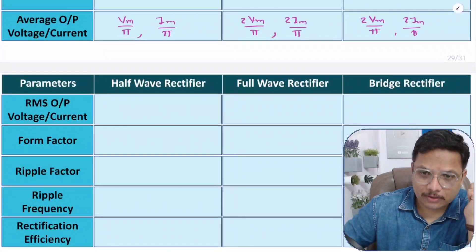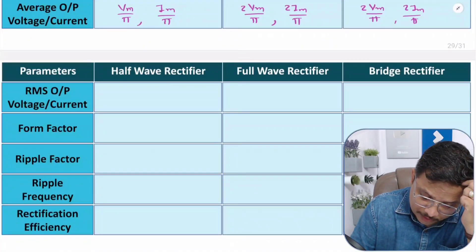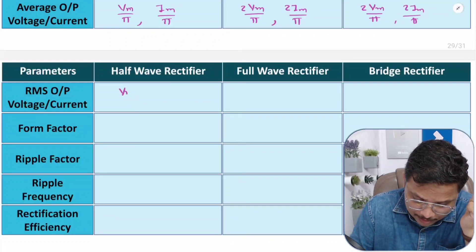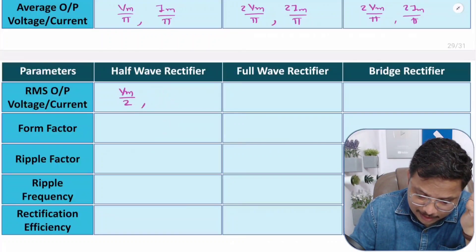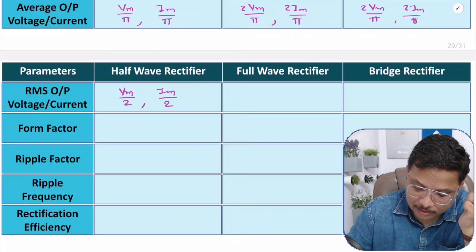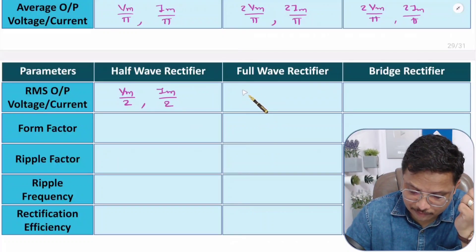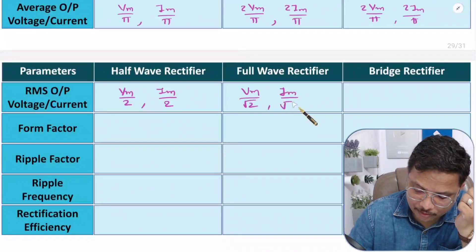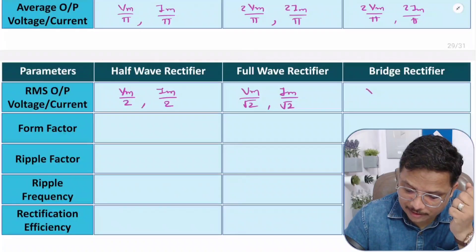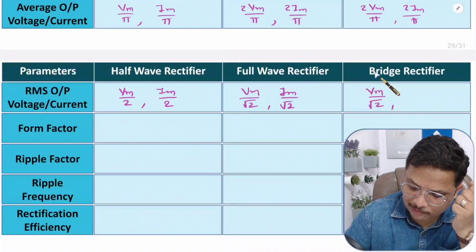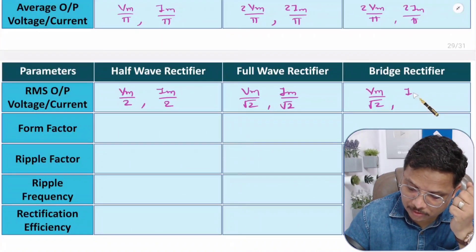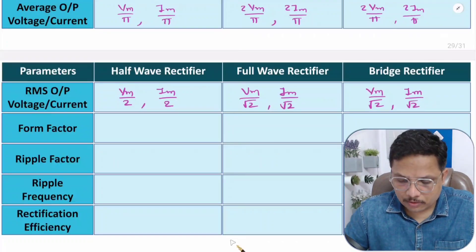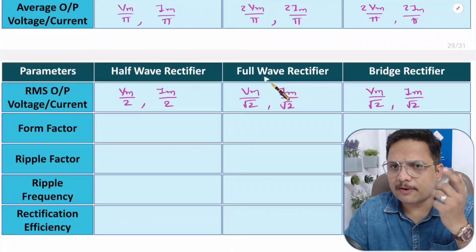Now the RMS values. With a half wave rectifier, RMS voltage is Vm/2 and RMS current is Im/2. With a full wave rectifier, RMS voltage is Vm/√2 and RMS current is Im/√2. With a bridge rectifier it is also Vm/√2 and Im/√2 — both full wave and bridge rectifier give the same RMS values.